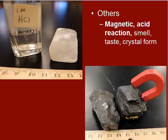The next category is 'others,' which includes acid reactions. You'll take a bit of very weak hydrochloric acid — don't worry, it won't burn you, but don't eat it or get it in your eyes. If you put a drop on a mineral and it starts to effervesce and bubble, that means calcium carbonate is present — a telltale sign for calcite. If a mineral is magnetic and attracted to a magnet, that's a telltale sign for magnetite. You can also smell minerals; usually the distinctive smell will be sulfur. You can taste minerals too, but that's highly discouraged — ask the instructor instead. If a mineral tastes salty, you have halite.